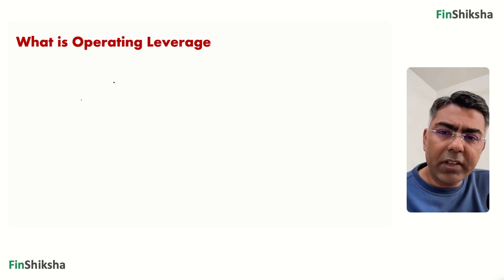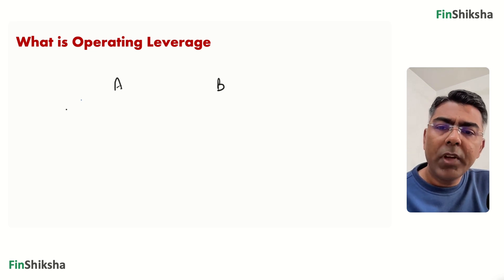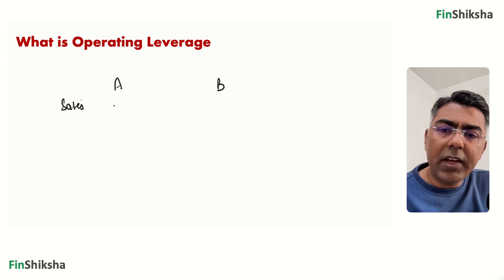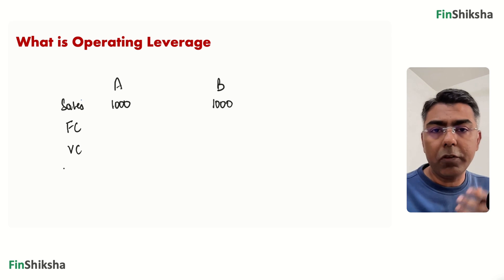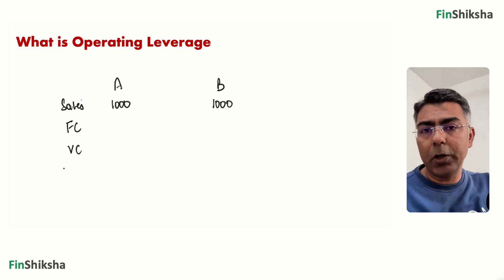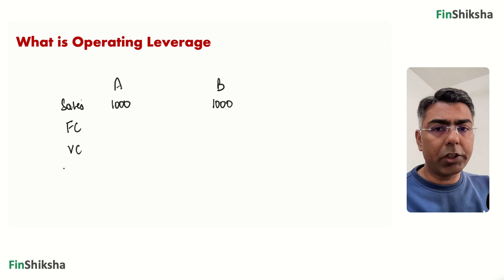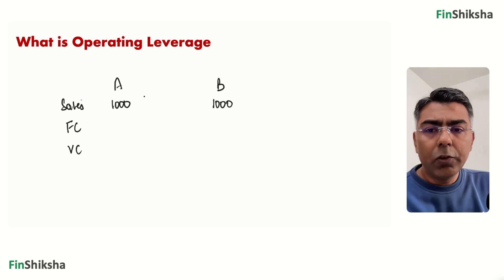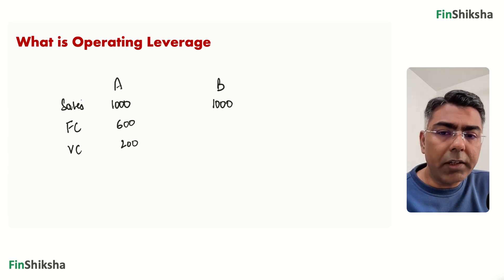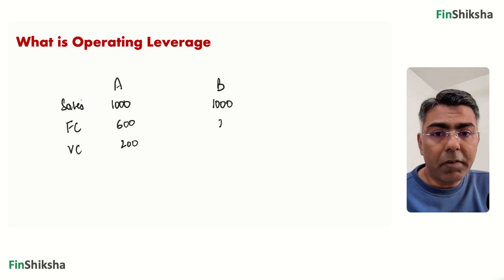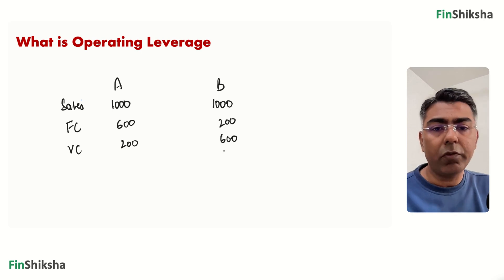Let's take the example of two companies — Company A and Company B. Sales of both companies is 1,000. We have fixed costs and variable costs. Variable cost is the cost that goes only into the production of a particular unit. For Company A, fixed cost is 600 and variable cost is 200. For Company B, it's the other way around — fixed cost is 200 and variable cost is 600.